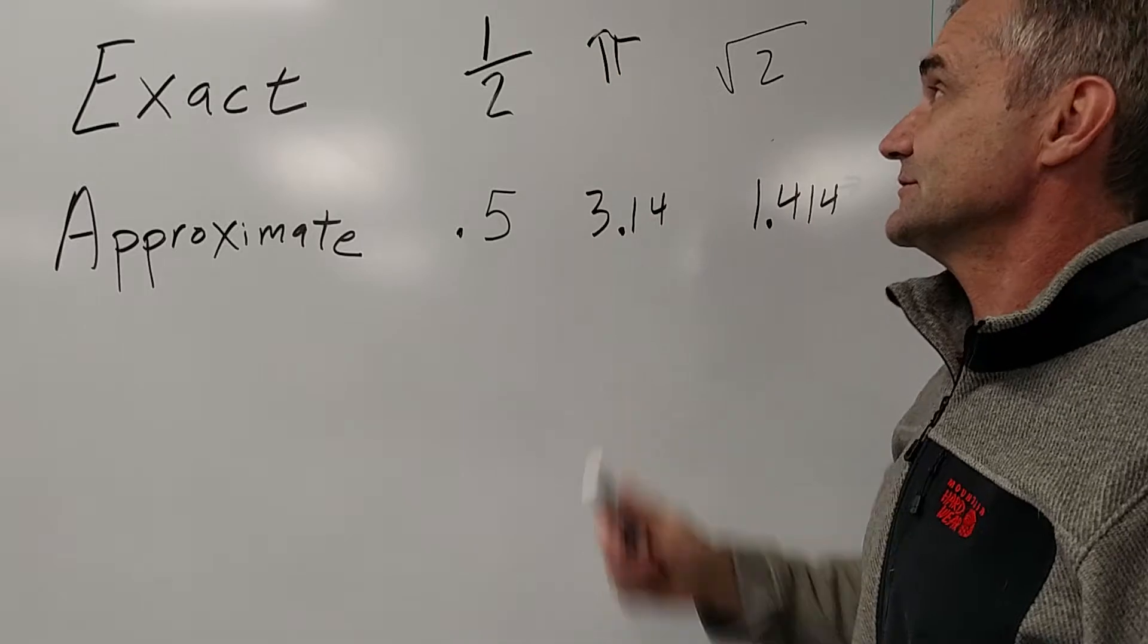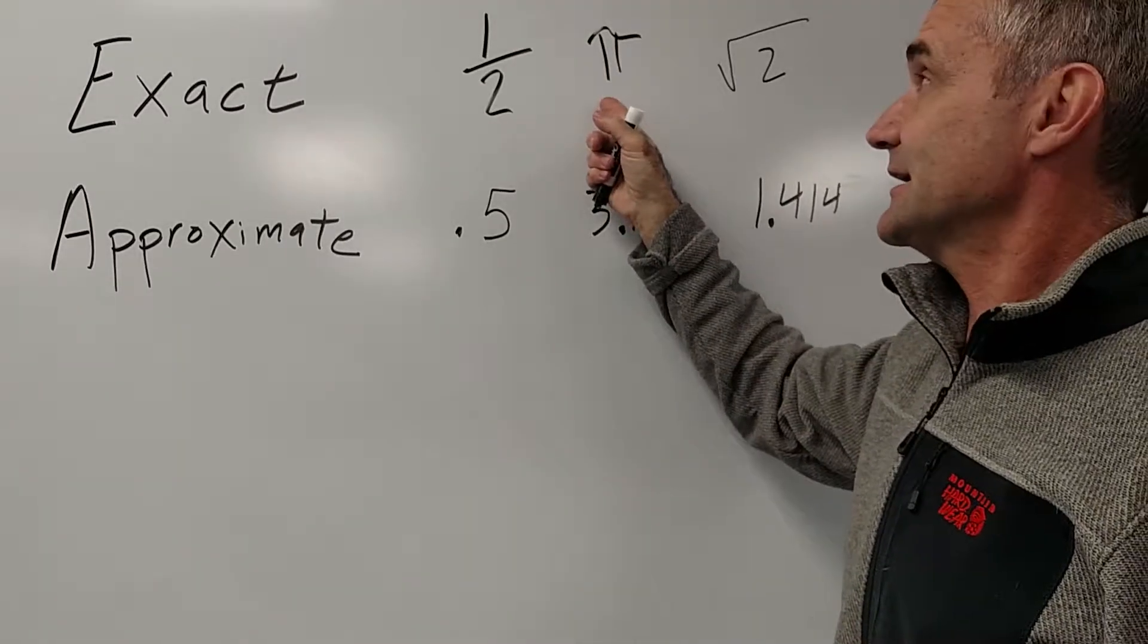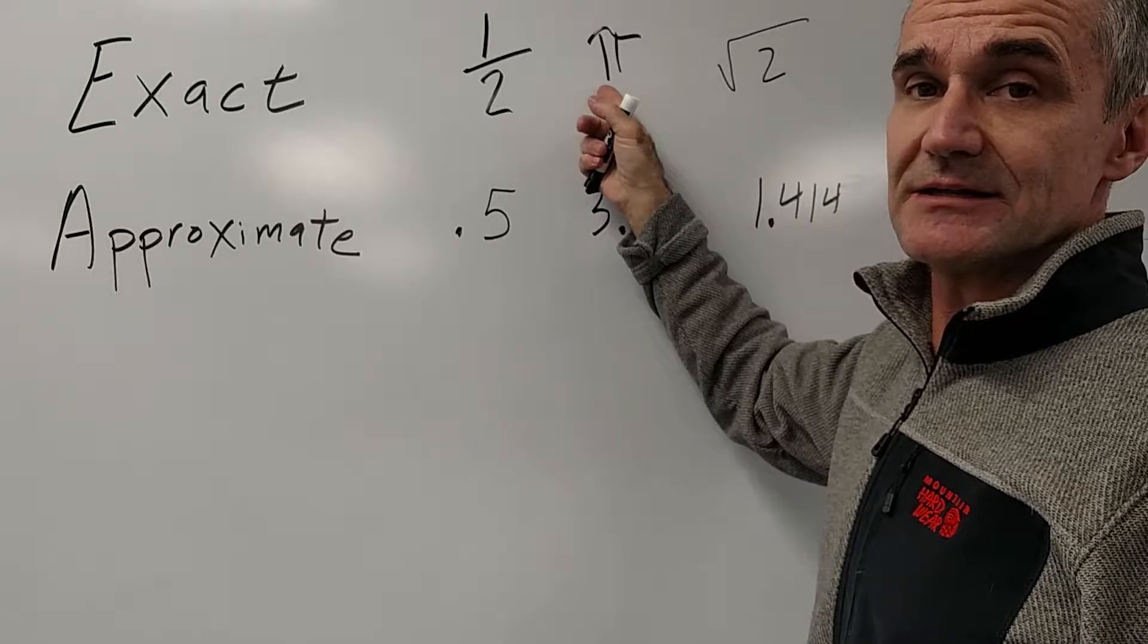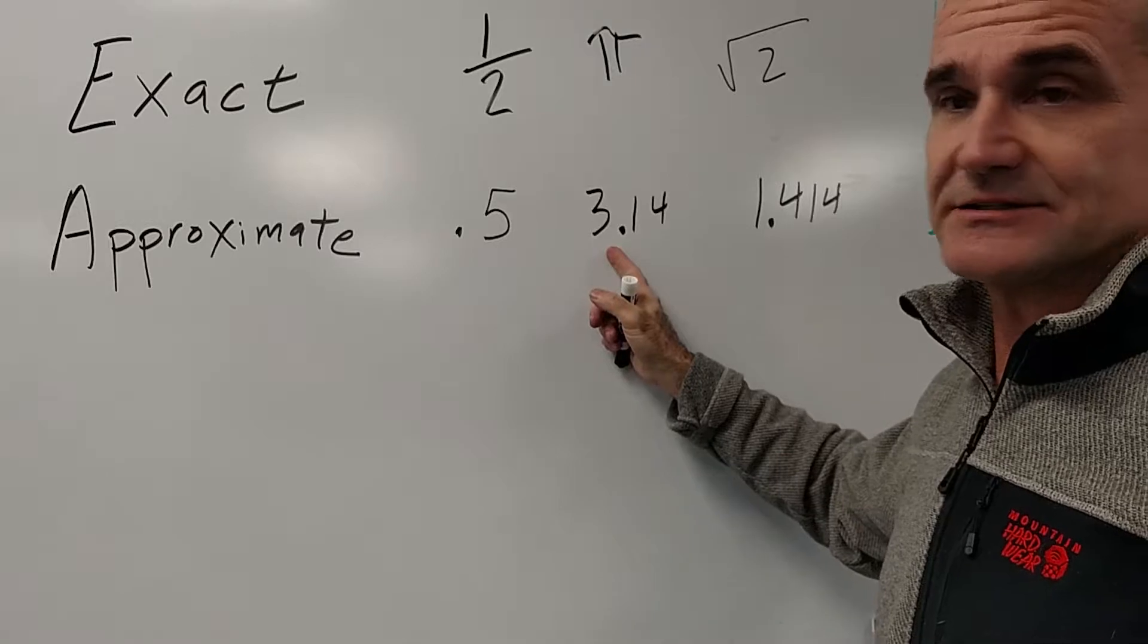If you're working with circles or radians, the exact value would be terms of pi. So the exact value would be pi. The decimal equivalent of it would be 3.14 or wherever you wanted to round it to.